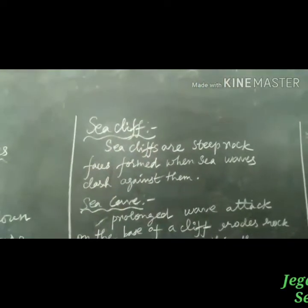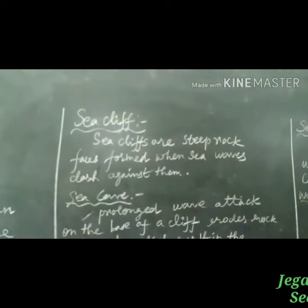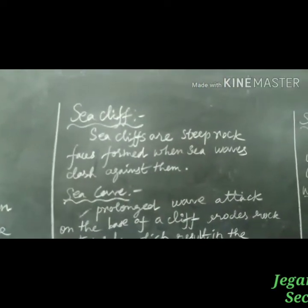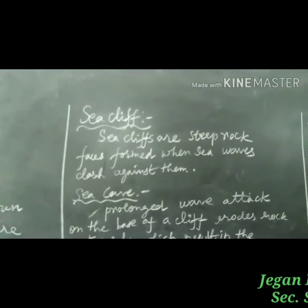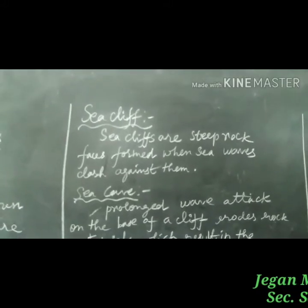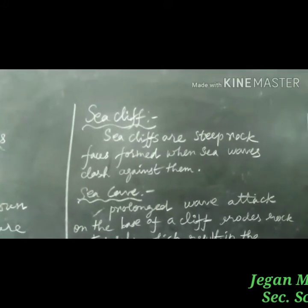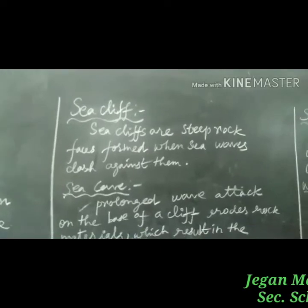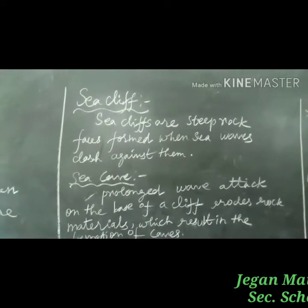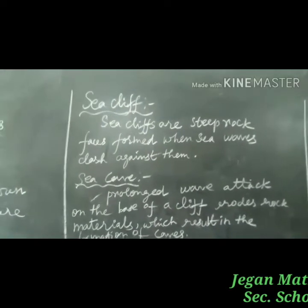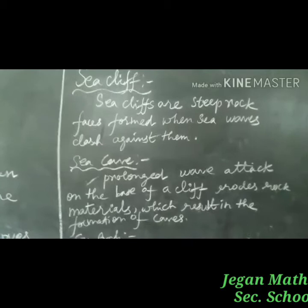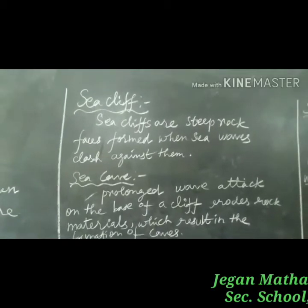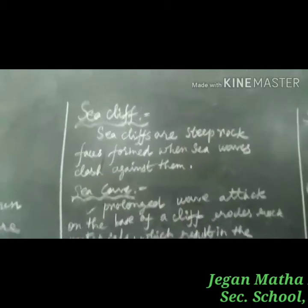Next is sea cliff. Sea cliffs are the steep rock face formed when sea waves erode them. The rock gets eroded to form steep vertical faces.